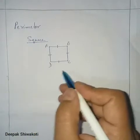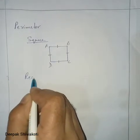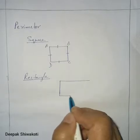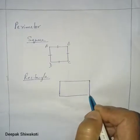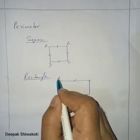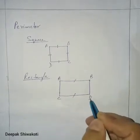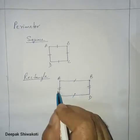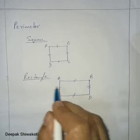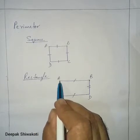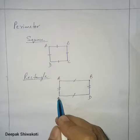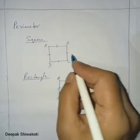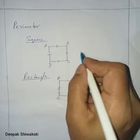This applies to every figure. For a rectangle, opposite sides are equal: line AB equals CD, and AC equals BD. Such a figure is called a rectangle. The perimeter is also found the same way: AB plus BD plus DC plus AC.